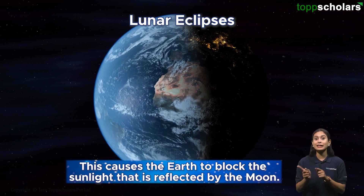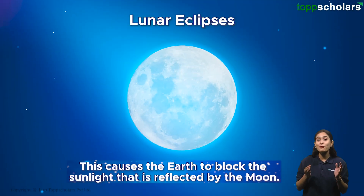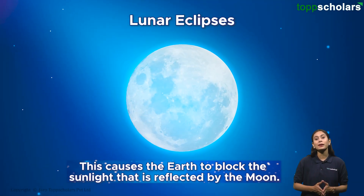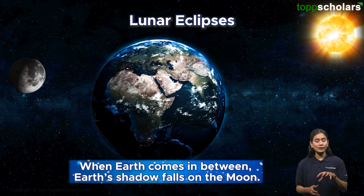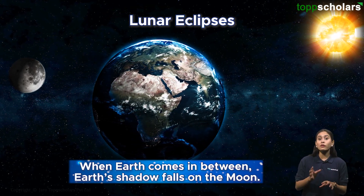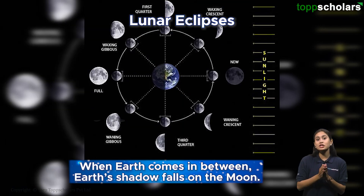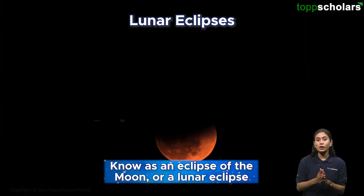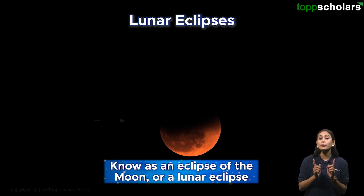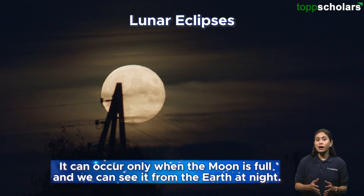The moon reflects sunlight, and that's what makes it shine. When the Earth comes in between, instead of light hitting the moon's surface, Earth's shadow falls on the moon. This is what we know as an eclipse of the moon, or a lunar eclipse.